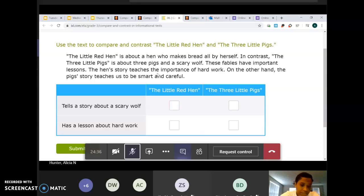Isaiah, unmute yourself and tell me. The Three Little Pigs. Good, The Three Little Pigs. Now, has a lesson about hard work. Damani, is that The Little Red Hen or The Three Little Pigs? The Little Red, The Three Little Pigs. The Little Pigs, she says The Three Little Pigs. Hmm, I'm not sure. Zainab, tell me, is it The Three Little Pigs or The Little Red Hen? How do you know?